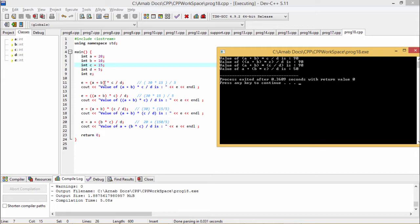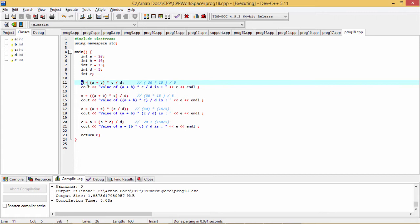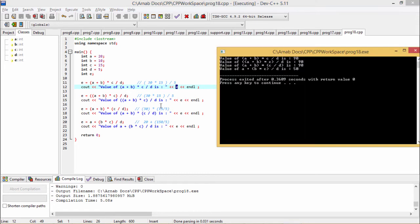A plus B means 30 into 15 by D. 30 into 15 by this D, D means 5, here we are supposed to get the value as 90. In the first line, the expression will produce the output as 90. We have defined this E. E has been initialized with this expression's output and the value of E is getting printed at the end.